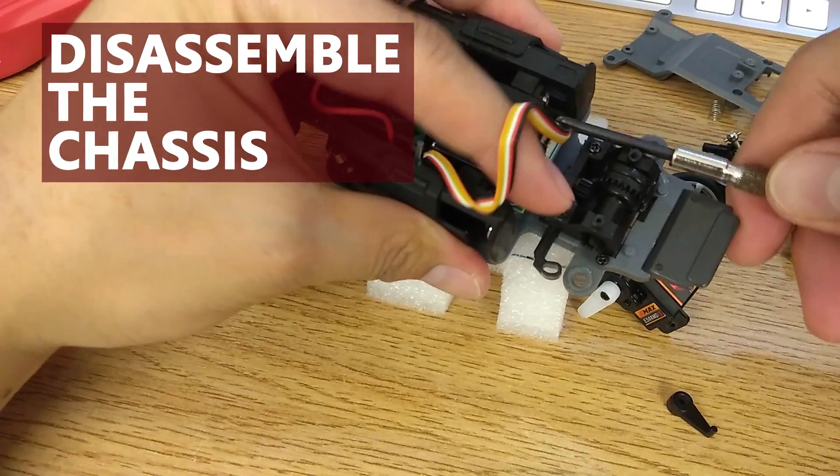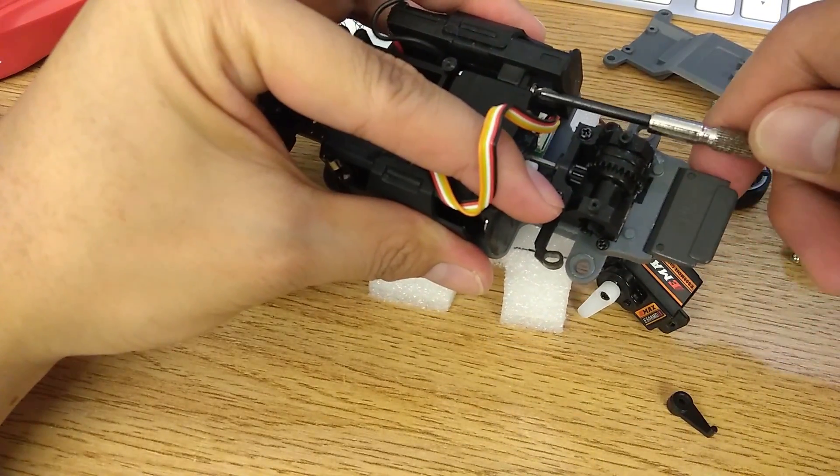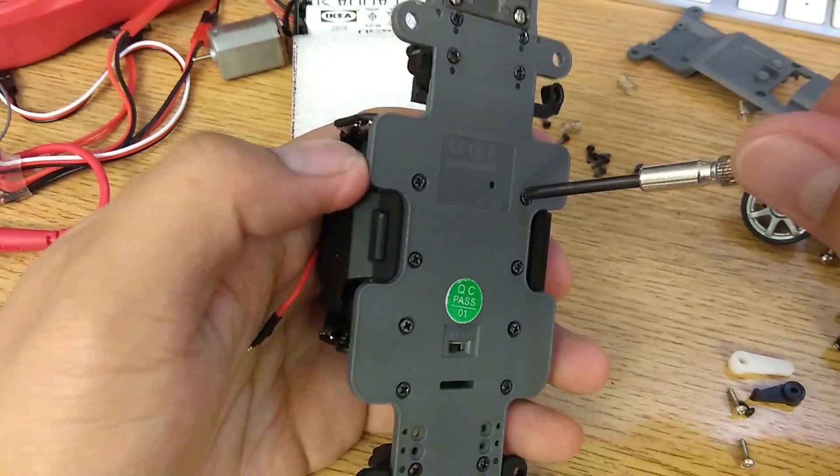To start planning what goes where, let's disassemble it down to bare chassis. First, remove the battery and motor trays.